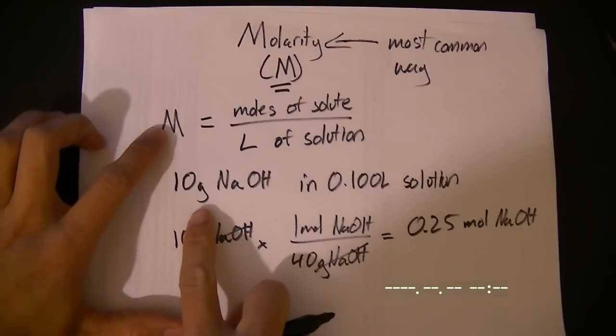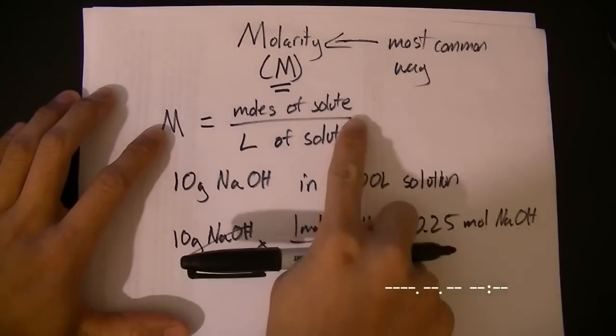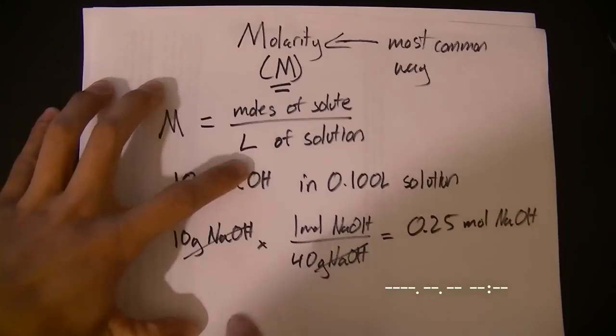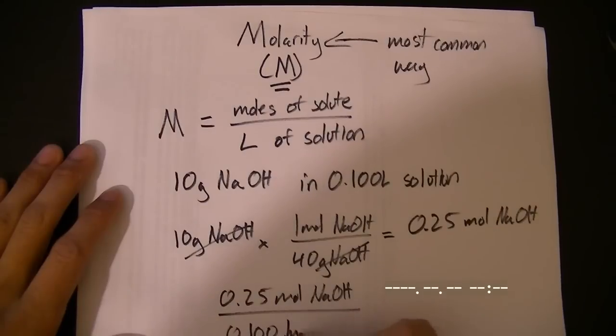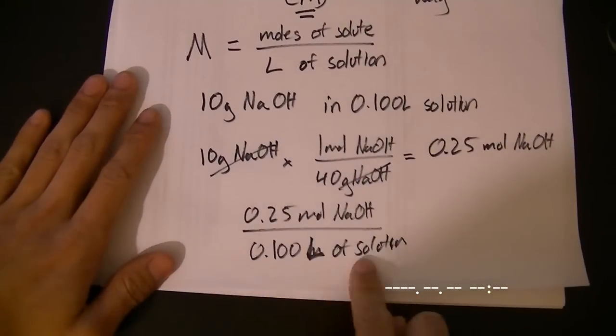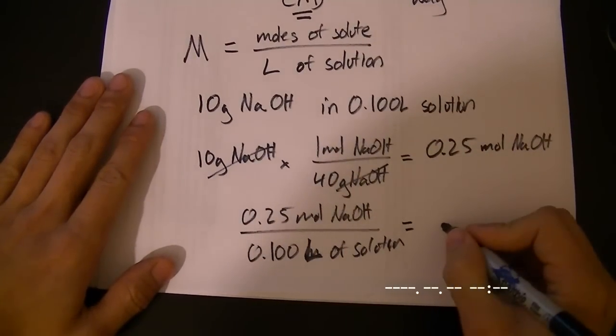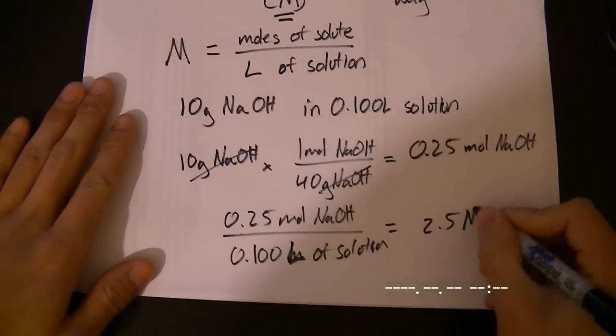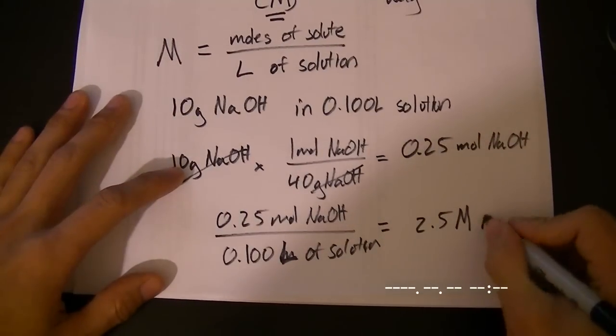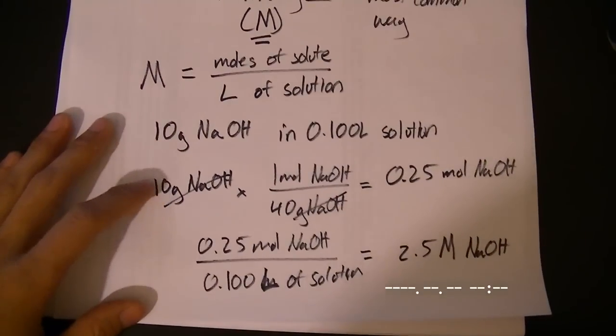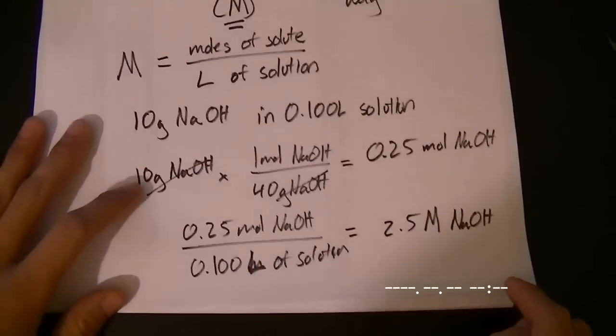And finally, to get our molarity, we have our moles of solute and our liters of solution. Just plug in the number: 0.25 moles of NaOH over 0.100 liters of solution. And we will get 2.5 molar. This is how we refer to the molarity of the concentration of something. 2.5 molar NaOH. That would be some pretty strong cleaner.